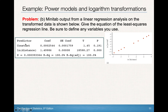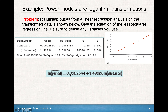Here is the Minitab output for the linear regression analysis of the transformed data — that is, ln(x) versus ln(y). The regression equation is: ln(period-hat) = 0.0002544 + 1.49986 · ln(distance). The y-intercept is 0.0002544, the slope is 1.49986 (which also equals the power p in the original power model), and we include the standard error and standard deviation of residuals as seen in the previous unit.